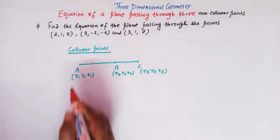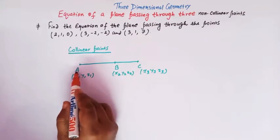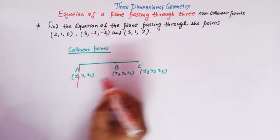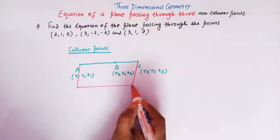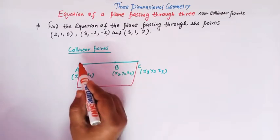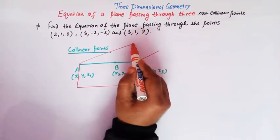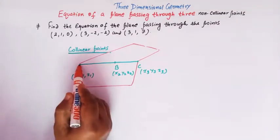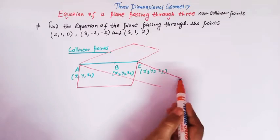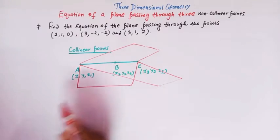Now when we have three collinear points and we find the equation of a plane passing through them, we can have one plane like this passing through those three points. Similarly, we can have another plane passing through these three collinear points, and yet another plane like this as well. So it shows that whenever we have three collinear points, there are an infinite number of planes passing through them.